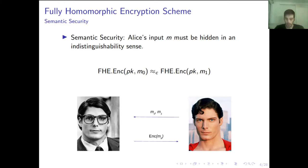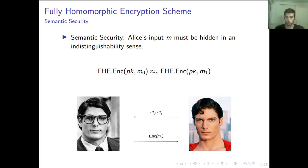In a setting like this, we want to achieve security. First of all, we want semantic security, which means that we want Alice's message M to be hidden at all times. In other words, we want Bob or the server to not be able to tell apart encryptions of two different messages, M0 and M1.